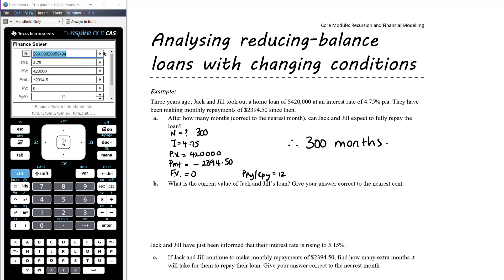Okay, so therefore it's going to take 300 months correct to the nearest month. Part B, what is the current value of Jack and Jill's loan? Okay, so they took out this loan three years ago so they've been doing this for three years. Okay, so that's 36 months. So we want to work out what is the future value, so this time compared to last time n is going to change to 36 and the future value is now what we don't know. Everything else is going to stay as it was in part A.